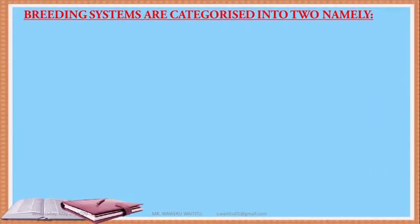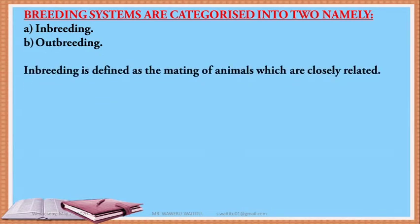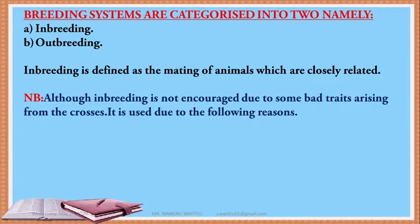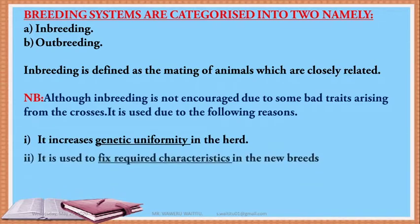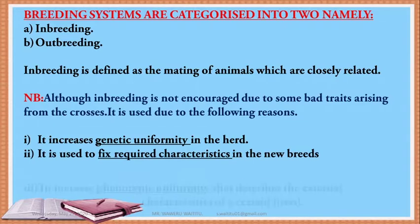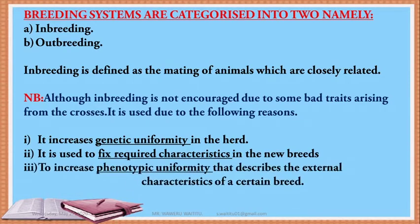Let us discuss the breeding systems animal breeders use in improving cattle. The breeding systems are categorized into two: inbreeding and outbreeding. Inbreeding is defined as the mating of animals which are closely related. Although inbreeding is not encouraged due to some bad traits arising from the crosses, it is used for the following reasons: number one, it increases the genetic uniformity in the herd; number two, it is used to fix required characteristics in new breeds, ensuring that the characteristic acquired will express itself in subsequent generations.